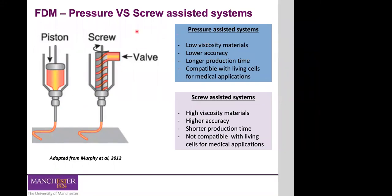In terms of disadvantages of pistons: you need to use lower viscosity materials compared to the screw. Also, the accuracy and resolution are lower, and you have higher production times because of reduced speed and control over the extrusion process. In summary: the common setup requires pre-filaments; there are two main extrusion-based variations — piston and screw — and they have specific advantages and limitations.